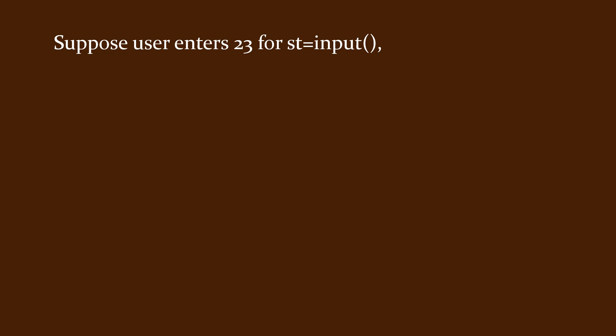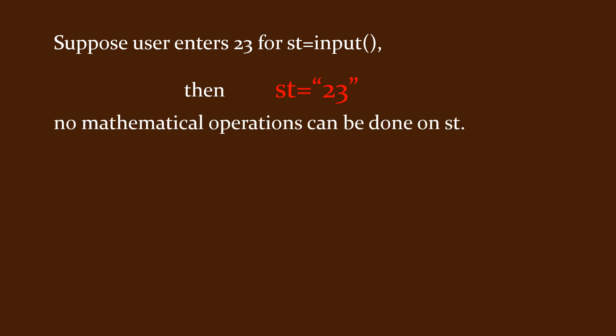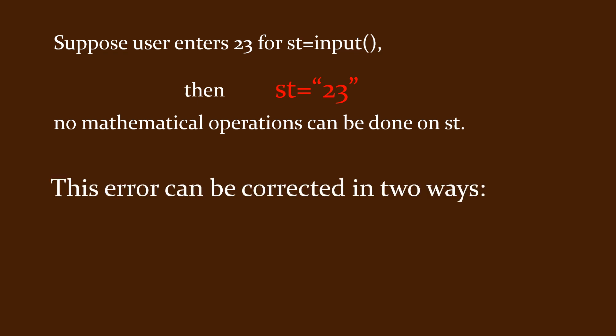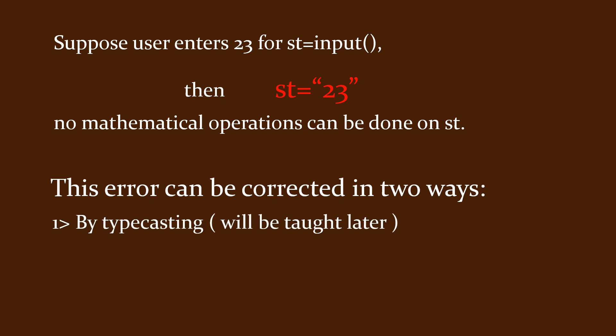Here is a small piece of information that I want you to remember, as a lot of people make this mistake. Suppose you have written st equal to input — the computer expects either a character or a string, because the syntax for accepting a character and a string are the same. If you enter 23, the computer will treat this 23 as a string and not a number, which means you cannot do mathematical operations like addition or subtraction on it. These errors can be corrected either by typecasting, which you will learn in the sixth video, or by taking the input as an integer.